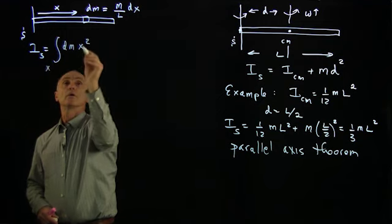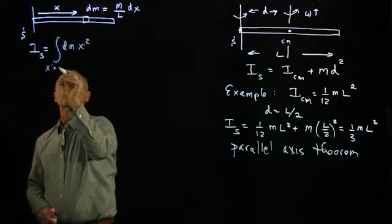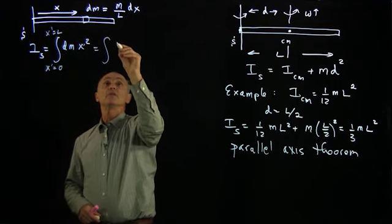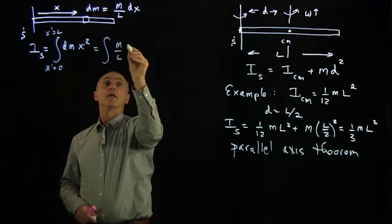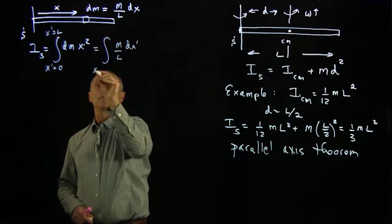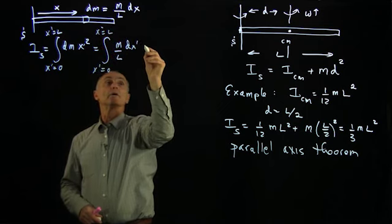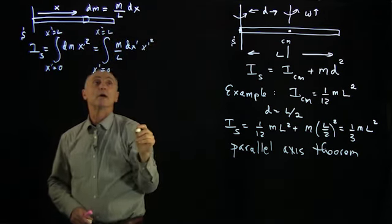Then the moment is dm times x squared, where x will give us an integration variable. x prime goes from 0 to x prime equals L. And so we have for our dm, m over L dx prime. Remember, that's our integration variable. And we have x squared, so that's x prime squared.